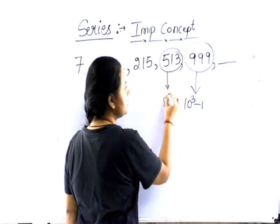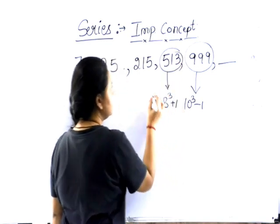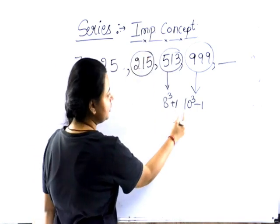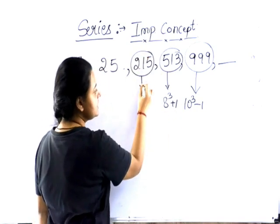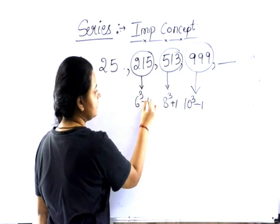8 cube plus 1. Please do this. So this way you can see, 10 cube, 8 cube, 6 cube minus 1, series will become.